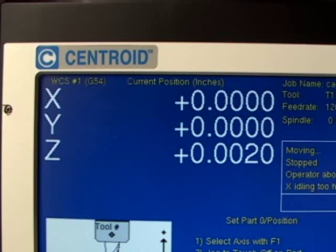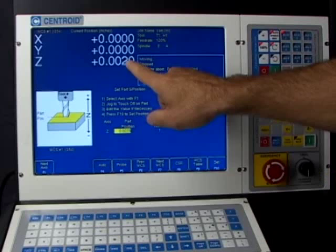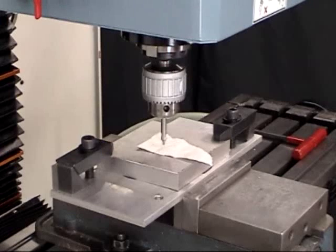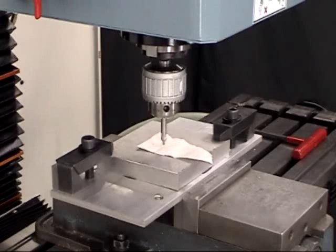There we go. We just zeroed out our Z zero position. And again, Z is reading two thousandths above zero because that's the thickness of the piece of paper between the tool and the zero position.